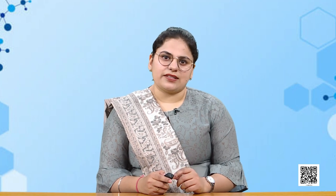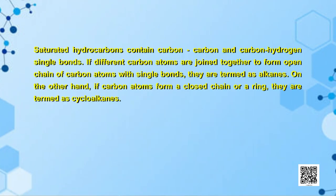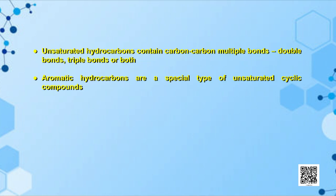Now our first discussion is about the classification of hydrocarbons. Depending upon the types of carbon-carbon bonds present, hydrocarbons can be classified into three main categories: first, saturated hydrocarbons; second, unsaturated hydrocarbons; and third, aromatic hydrocarbons. Saturated hydrocarbons contain carbon-carbon and carbon-hydrogen single bonds. If different carbon atoms are joined to form an open chain with single bonds, they are termed alkanes; if they form a closed chain or ring, they are termed cycloalkanes. Unsaturated hydrocarbons contain either carbon-carbon double or triple bonds, and aromatic hydrocarbons are a special type of unsaturated cyclic compounds.